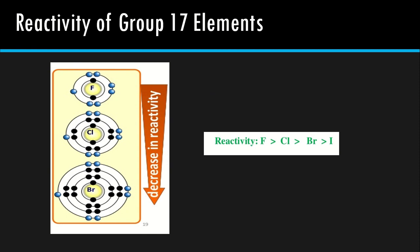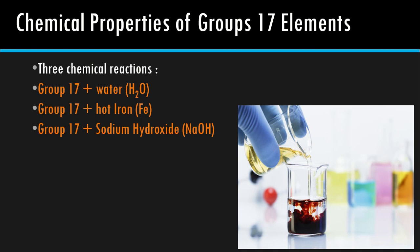So this is the conclusion: the most reactive is fluorine, chlorine, bromine, and the last one is iodine. Untuk membuktikan kereaktifan dia, kita akan buat tiga experiment untuk Group 17 — react Group 17 dengan water, second Group 17 dengan hot iron (Fe metal), dan ketiga Group 17 dengan sodium hydroxide (alkaline).